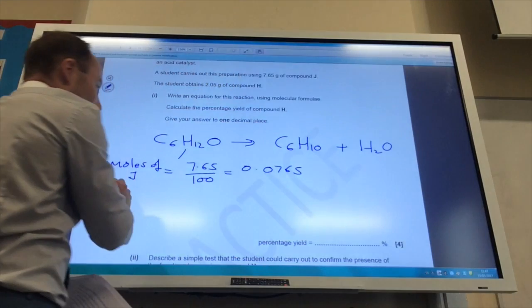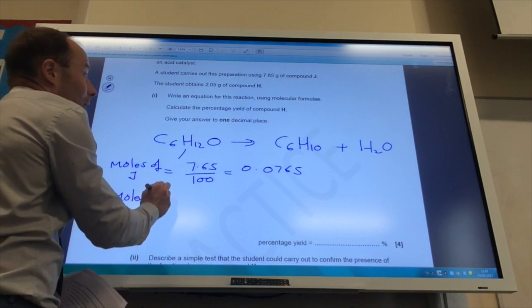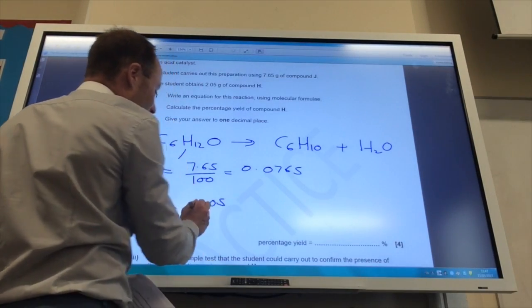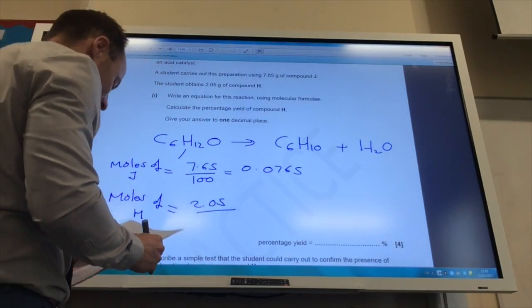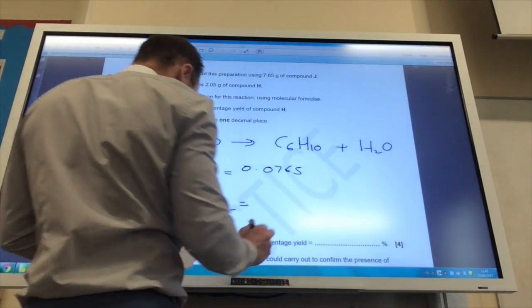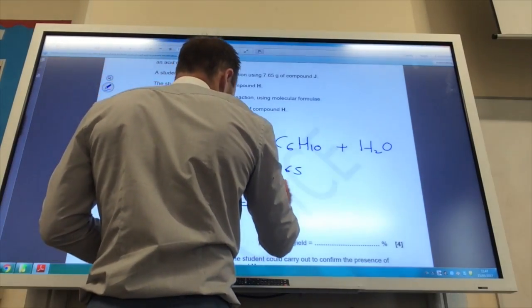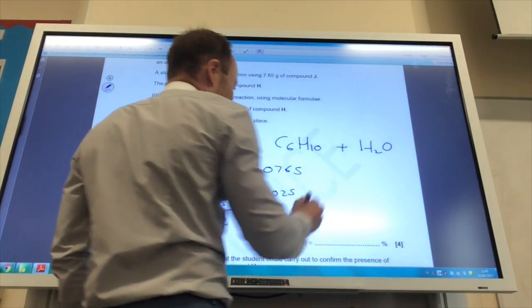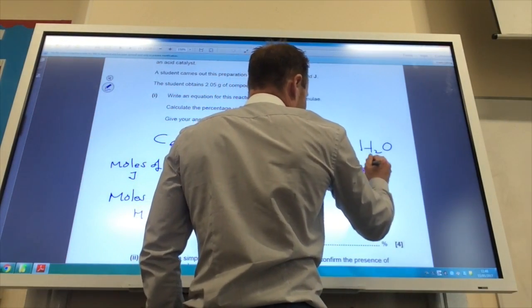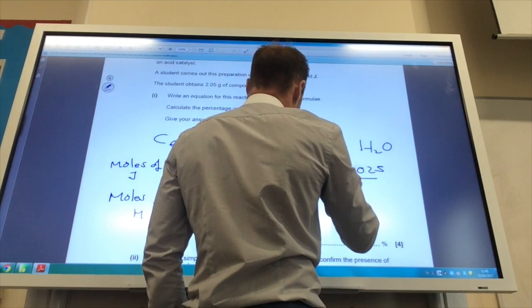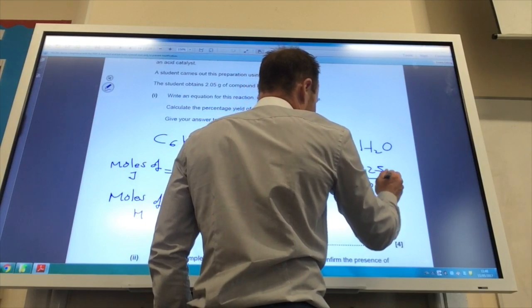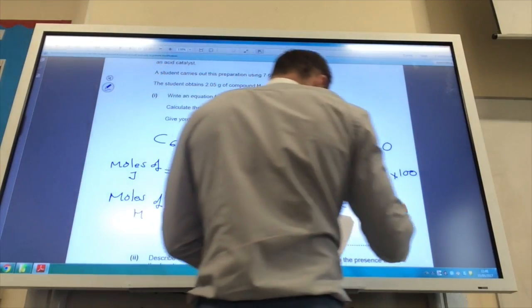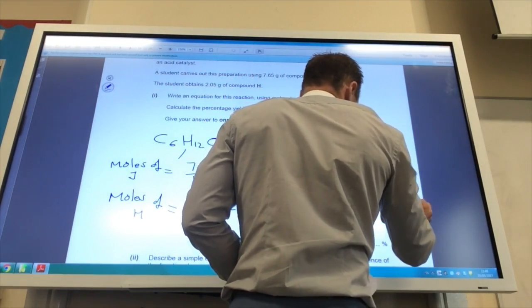I then work out the moles of H, which is my mass, 2.05, divided by the molar mass, which is going to be 82. That gives me 0.025. And then your percentage yield is that divided by that. So 0.025 divided by 0.0765 times 100. And that gives you 32.7%.